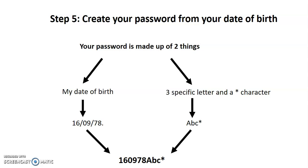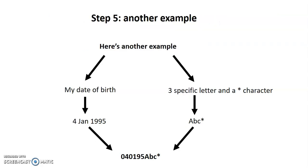Let me show you another example so it's clear what you have to do to create your password. Imagine somebody's date of birth was the 4th of January 1995 — that would require a zero, then a four, then a zero, then a one, then 9 and 5. Remember you have to put the zero before the four because it's less than 10; it's expecting six numbers. So at the bottom of the screen you can see 0-4-0-1-9-5, and again those four characters: capital A, lowercase b, lowercase c, and then an asterisk.